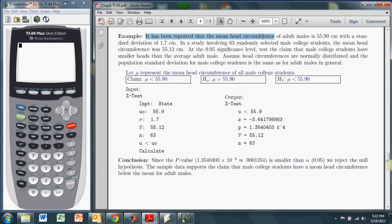It has been reported the mean head circumference of adult males is 55.90 centimeters, and the standard deviation of that population is 1.7. So we take a survey or a sample of 63 male college students, and their mean head circumference was 55.12.